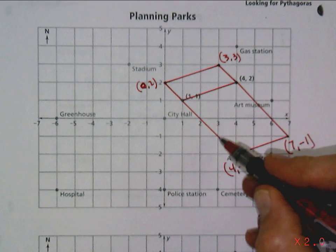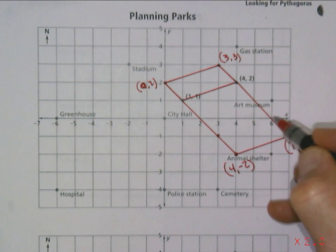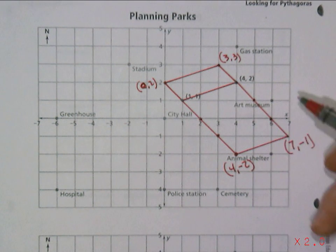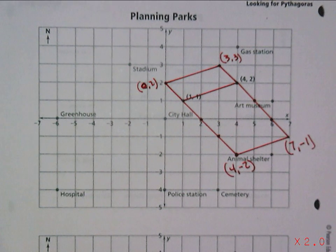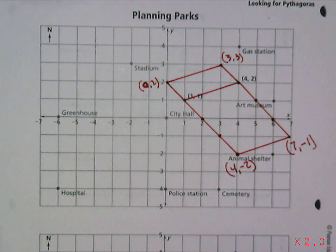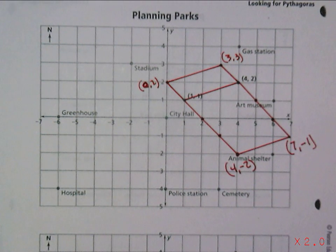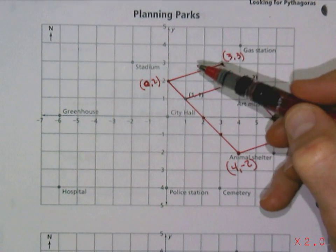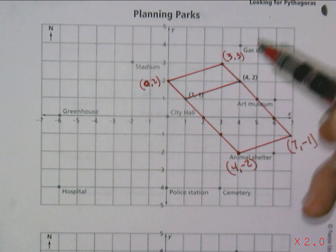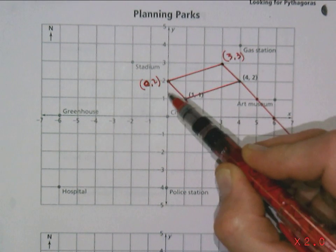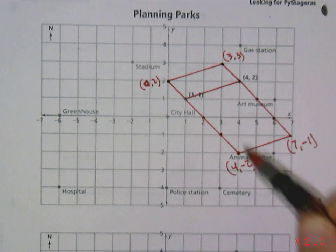Lots of possibilities for parallelogram parks — could have used these two points here and here, or these two right here and here. So again, lots of different possibilities for parks. Depending upon the shape of the park, we can fit it into the town of Euclid using the various shapes. The key idea here is really understanding shapes, as well as the whole concept of vertices or corners and how to use the coordinate plane to locate those points.